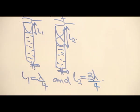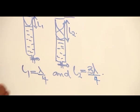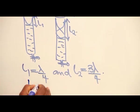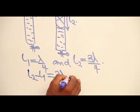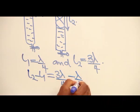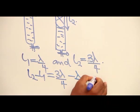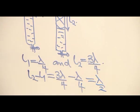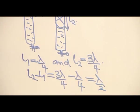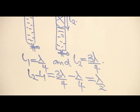If we subtract the two lengths, L2 minus L1 will give us 3 wavelengths over 4 minus wavelength over 4. And that will give you wavelength over 2. That is 2 wavelengths over 4. That is half of a wavelength.